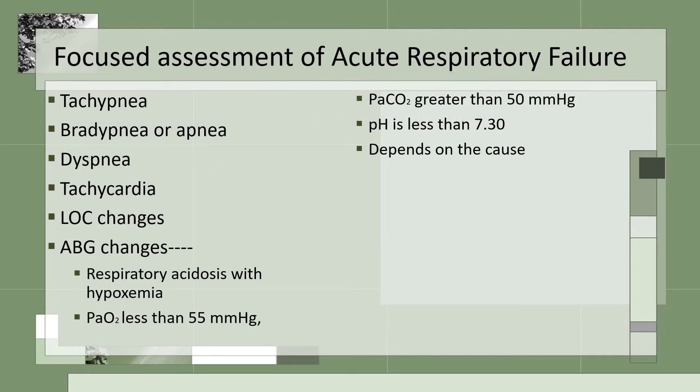The focused assessment of acute respiratory failure: you will have tachypnea originally, and that will change to bradypnea or apnea, dyspnea, and tachycardia. You're going to have LOC changes. Your ABGs will show respiratory acidosis with hypoxemia. Your PaO2 is going to be less than 55 — that's extremely low. Your PaCO2 is going to be greater than 50. Your pH is less than 7.30, and your other assessments will depend on the cause.